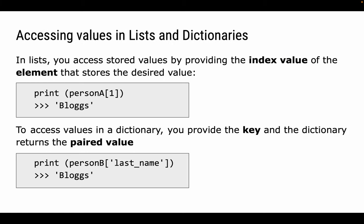And this is what we're showing in this slide here. In lists, you can access stored values by providing the index value of an element. So print person A1 prints out Bloggs. But it's far better to type print person B last name and get Bloggs. That's much more useful.